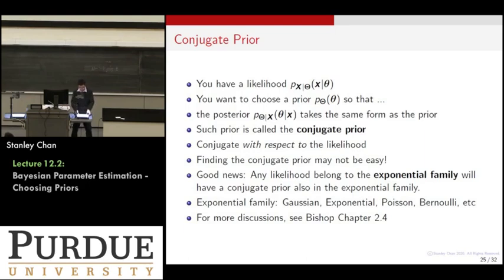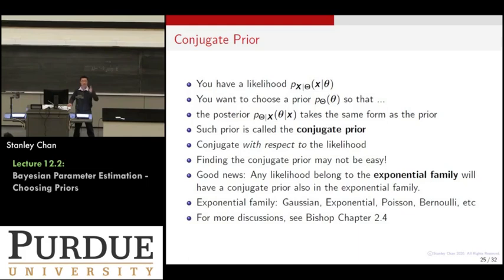A very important thing is that finding a conjugate prior may seem extremely complicated, because I show you the likelihood function and work out all this magic. But the good news is that for a lot of distributions belonging to the exponential family — which includes many of your favorite distributions including Gaussian, Laplace, and others — they will all have a conjugate prior. The conjugate prior is guaranteed to exist if you are working with exponential family distributions, which includes Gaussian, exponential, Poisson, and a bunch of others. If you're working on something outside that set, it's a question mark whether you can find one. But if you're inside the exponential family, you're guaranteed to find a conjugate prior.